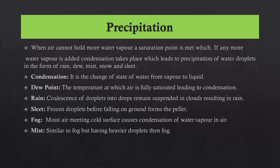What is precipitation? When air cannot hold more water vapor, a saturation point is met, and if any more water vapor is added, condensation takes place, which leads to precipitation of water droplets in the form of rain, dew, mist, snow, and sleet. Condensation is the change of state of water from vapor to liquid. The temperature at which air is fully saturated, leading to condensation, is known as the dew point. The type of precipitation differs based on temperature.